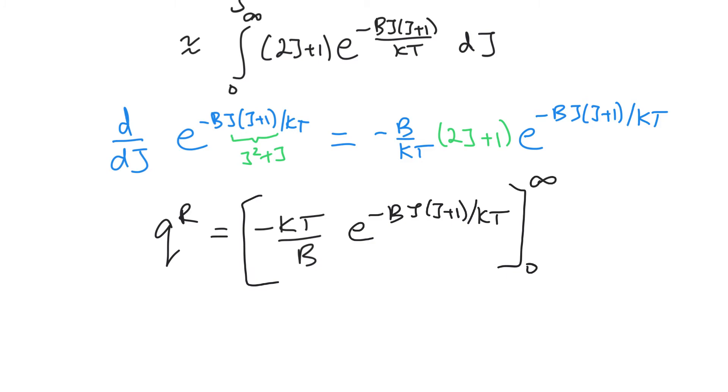We can plug these in. If we plug in the upper limit, j equals infinity, we have e to the minus infinity, which is zero. So that makes life easier. Then we subtract our lower limit. Our lower limit is minus kT over b times e to the minus zero. So e to the zero is one. That double negative becomes a positive and e to zero is one, so that equals kT over b. And that's what we saw earlier - q_r equals kT over b. Then we put in that fudge factor sigma, which represents the symmetry number.